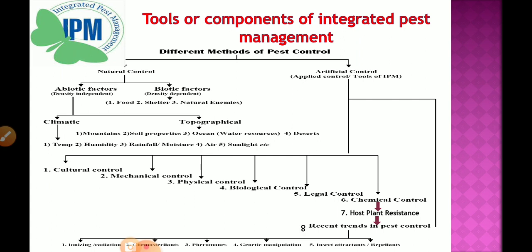In IPM there are two major methods: natural control and artificial control. In natural control, both non-living and living organisms affect the pest management program. Abiotic factors — also called density-independent factors — include climatic factors like temperature, humidity, rainfall, moisture, air, and sunlight. Topographical factors include mountains, soil properties, ocean, and desert.